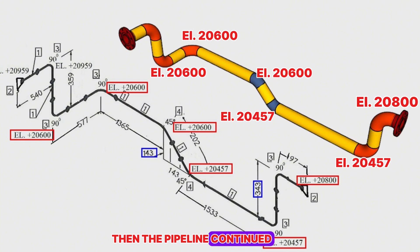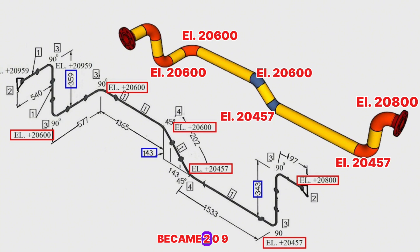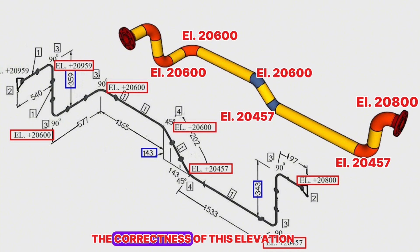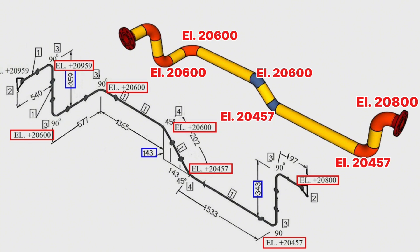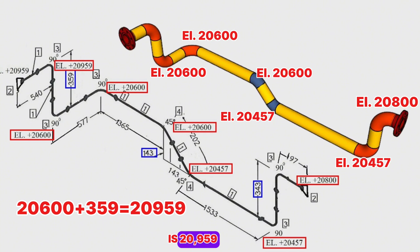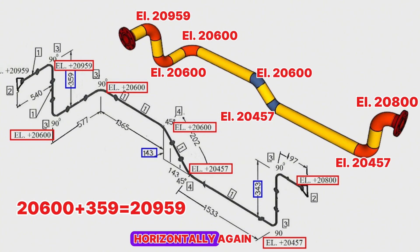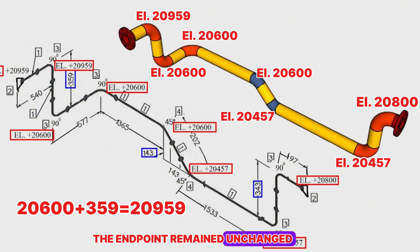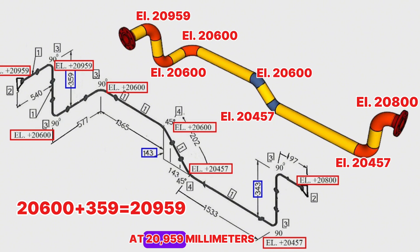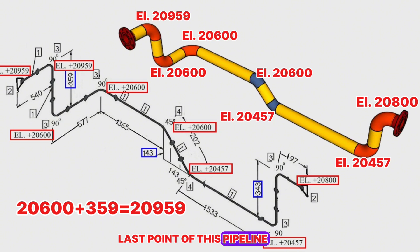Then the pipeline continued and the level rose 359 millimeters vertically, becoming 20,959 millimeters. We can check again: 20,600 plus 359 equals 20,959 millimeters. Eventually the pipeline continued horizontally and the end point elevation remained unchanged at 20,959 millimeters. Accordingly, the elevation of the last point of this pipeline is 20,959 millimeters.